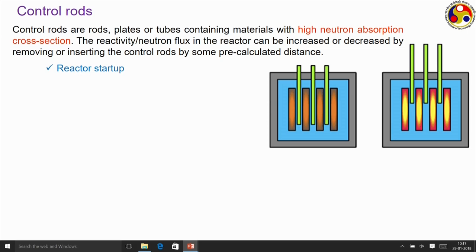Control rods serve several purposes. First, in reactor startup — when starting a reactor from a cold condition we need very high neutron flux. At that moment, control rods are completely outside the reactor, so that all neutrons produced or supplied from an external source are available to induce fission. We get a very high reaction rate which keeps increasing. As neutron concentration increases we slowly insert the control rods, putting some control, until we attain the desired equilibrium of neutrons produced by fission and consumed by control rods — achieving proper chain reaction.